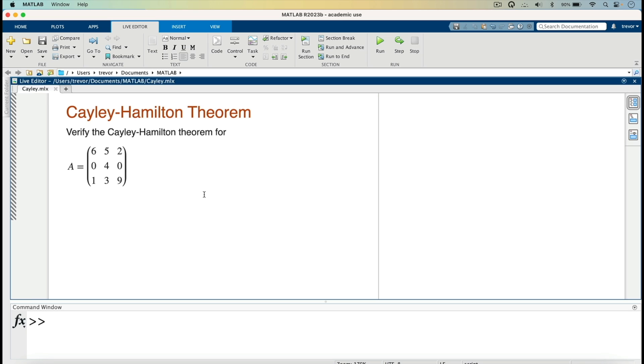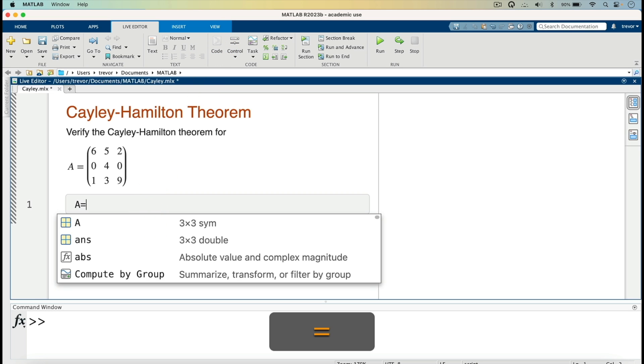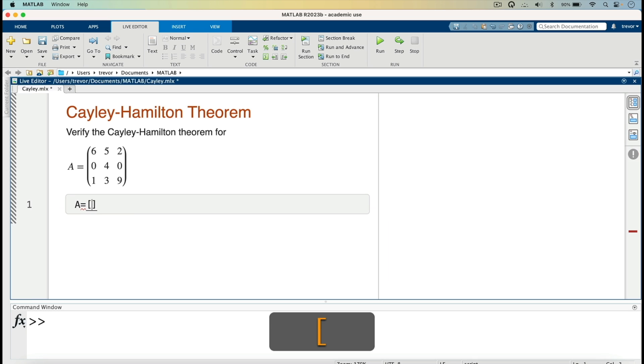So what I will do first is enter that matrix so that I will be able to find its characteristic polynomial. I will go to code here, then enter that matrix A equals open square brackets, then we are having the 6, 5, 2, then semicolon to indicate you are going to the next row.